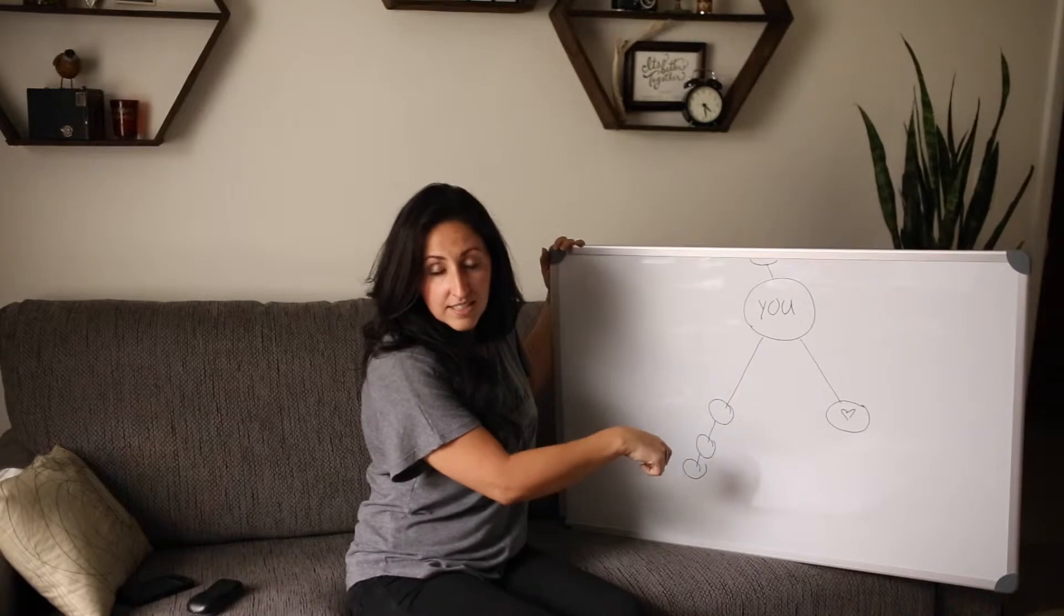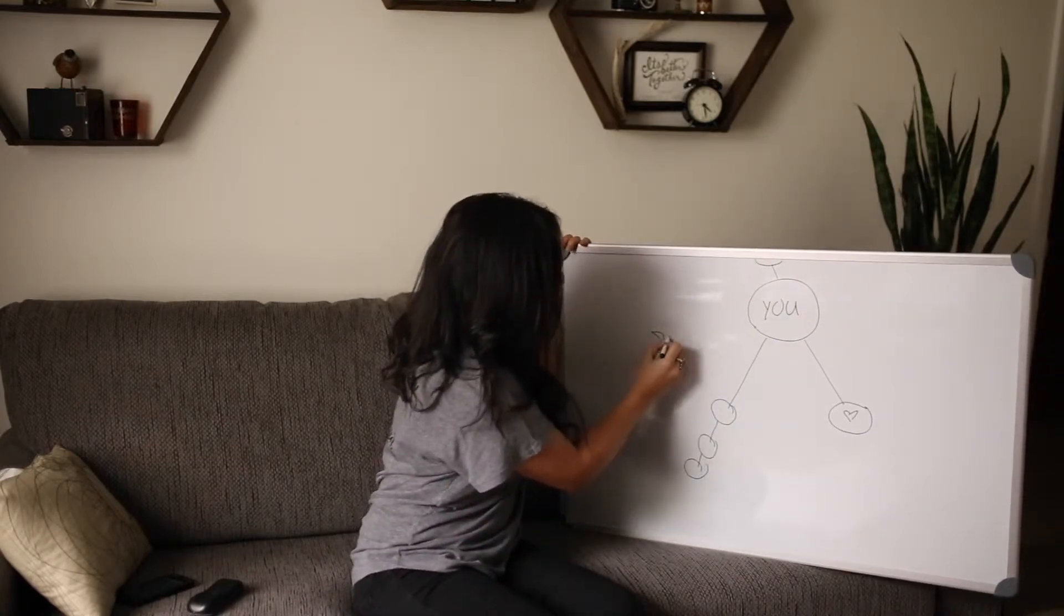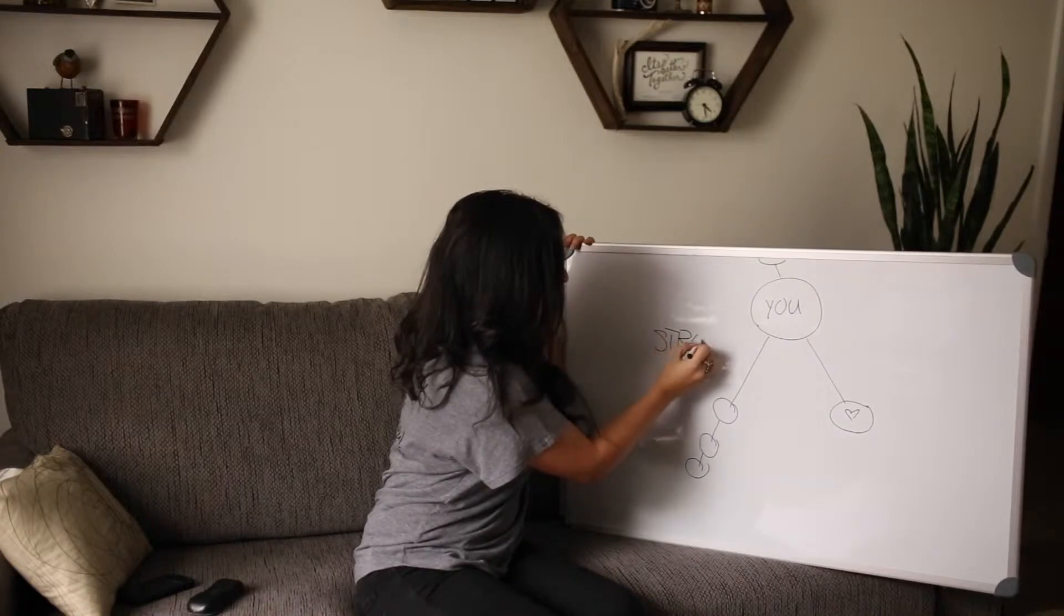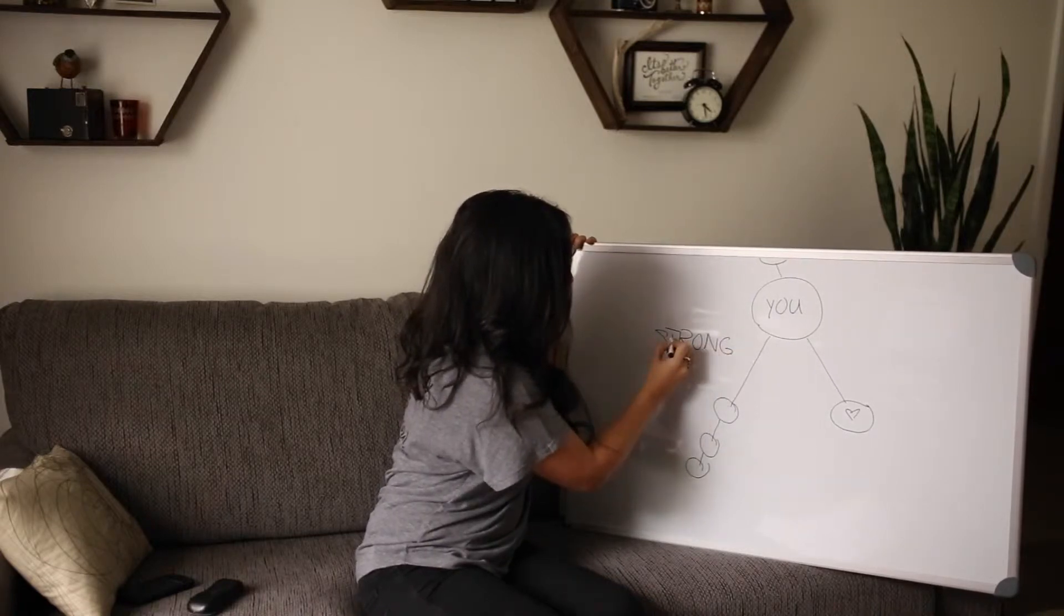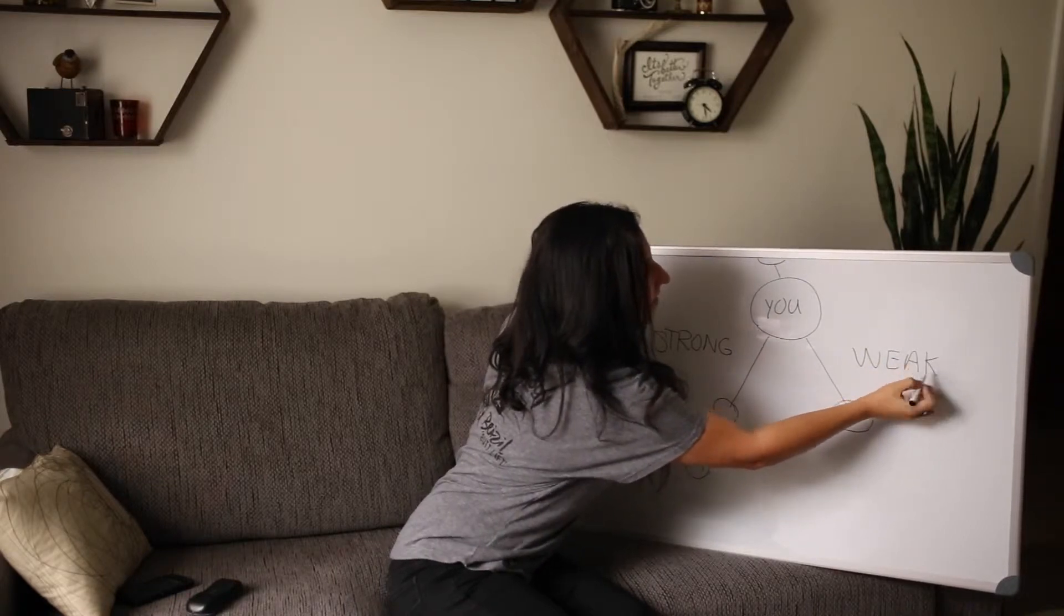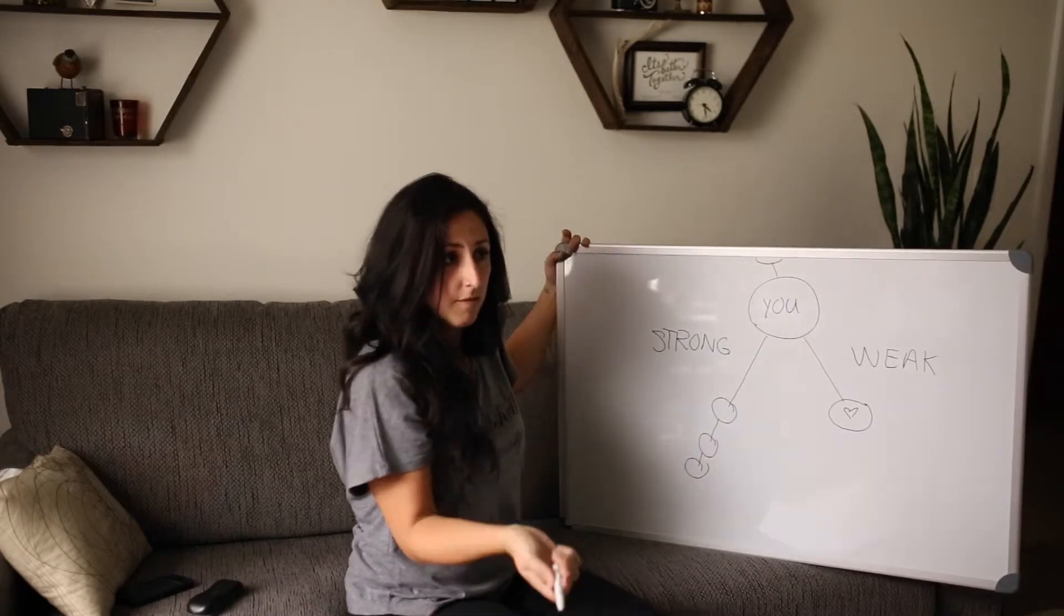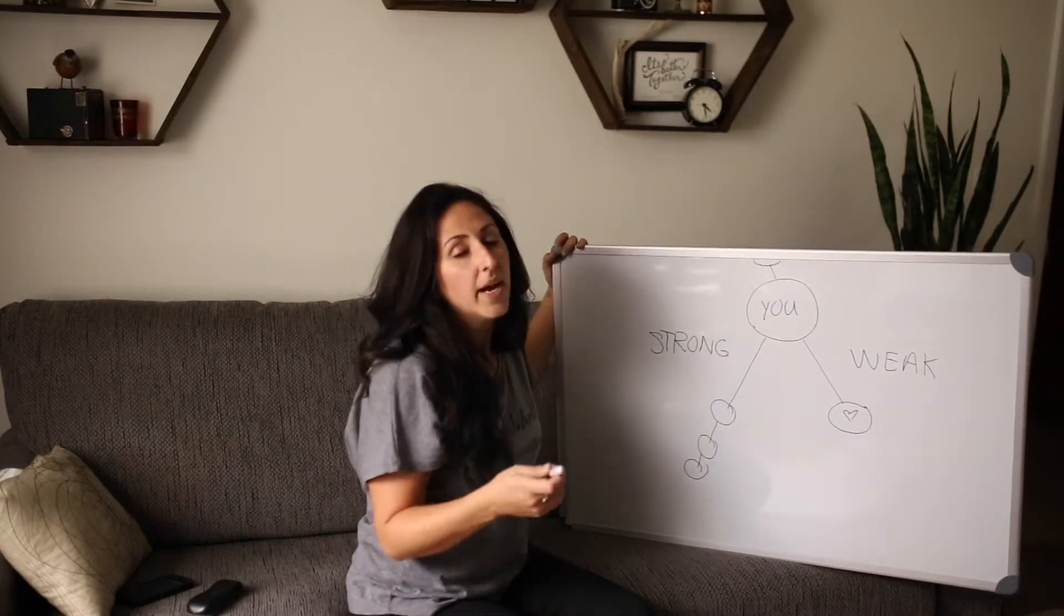If you start to notice this happening on one side, that leg is called your strong leg. And your other leg is called your weak leg. Now this can be different for different people. Some of you might have a strong left side. Some of you might have a strong right side. Just depends.